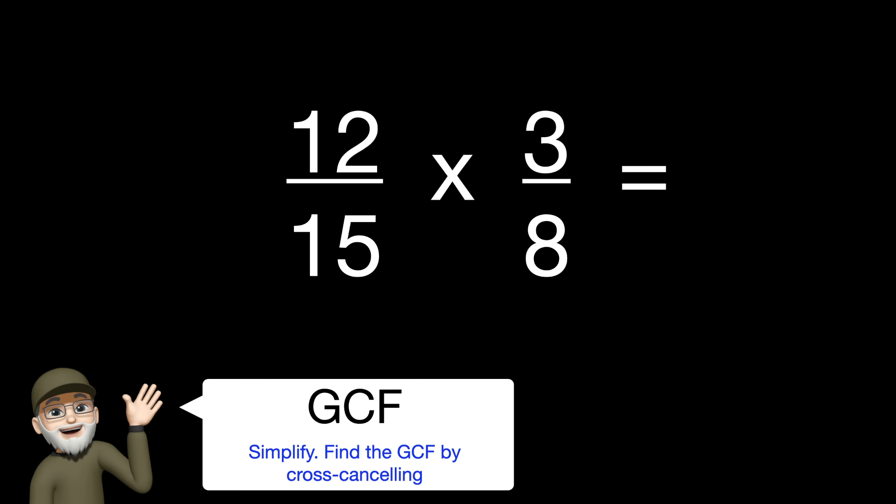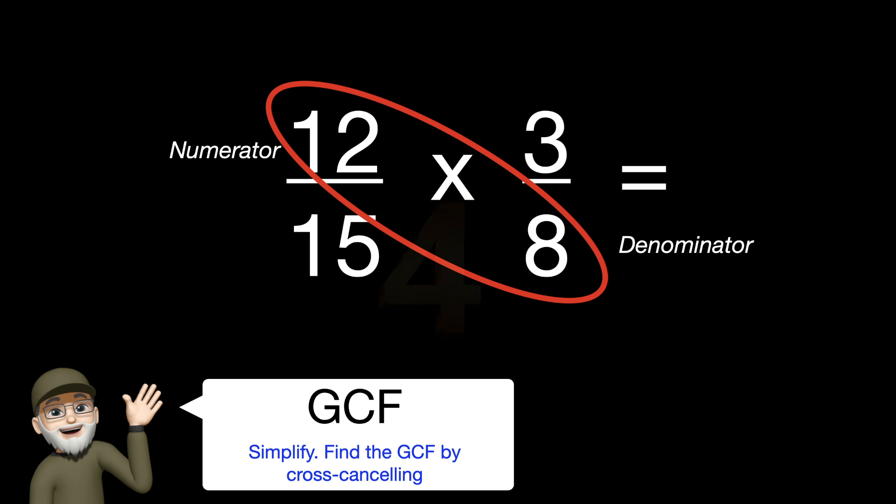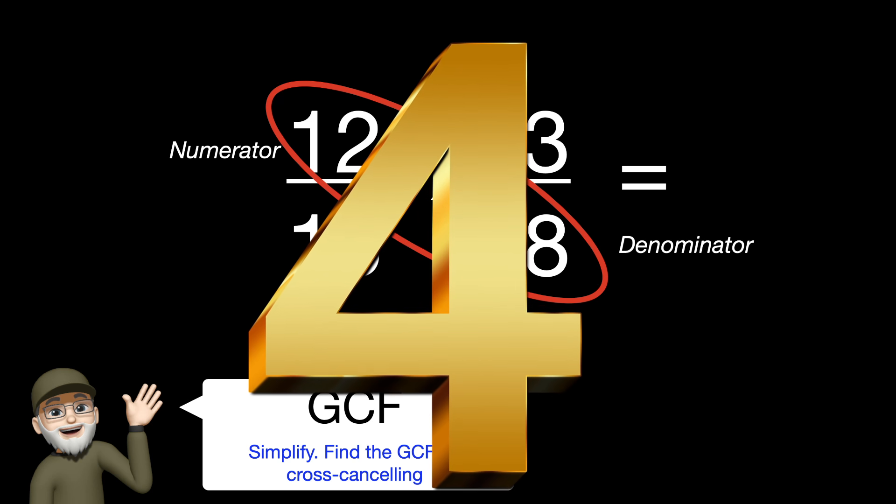Okay, going back to our original problem, let's walk through the steps just a little bit slower. Okay, so we're going to find the greatest common factor of 12 and 8. In other words, our opposite numerator and denominators. That would be 4.